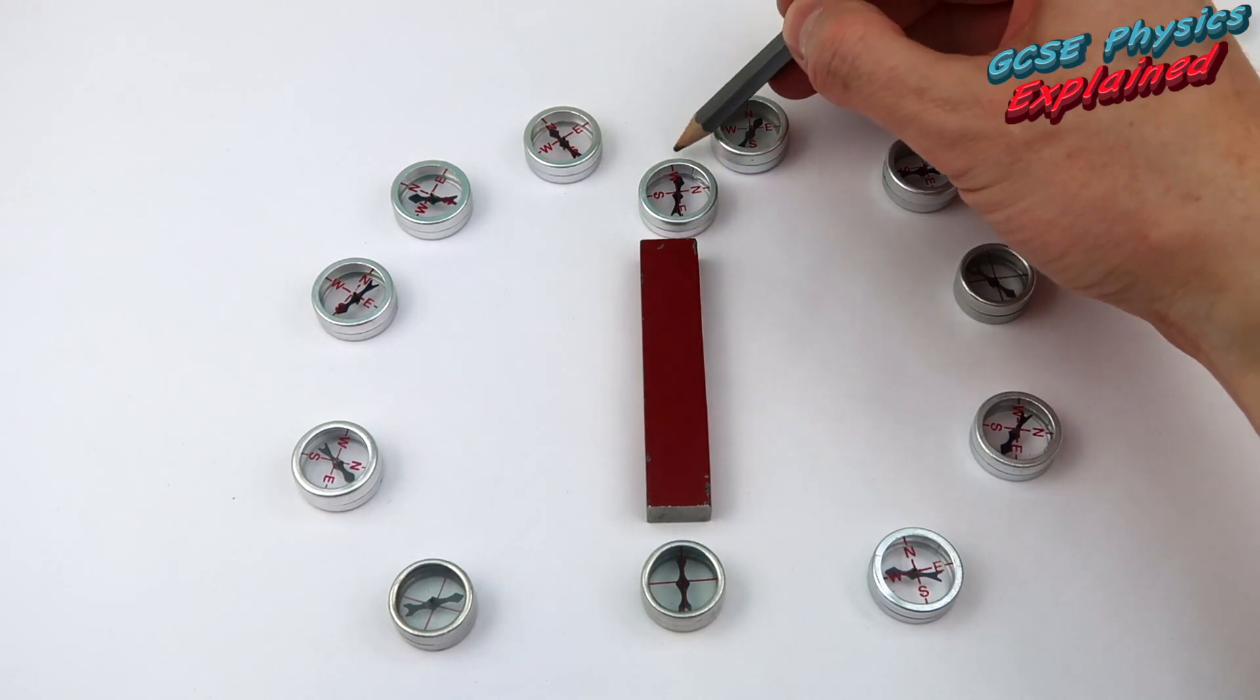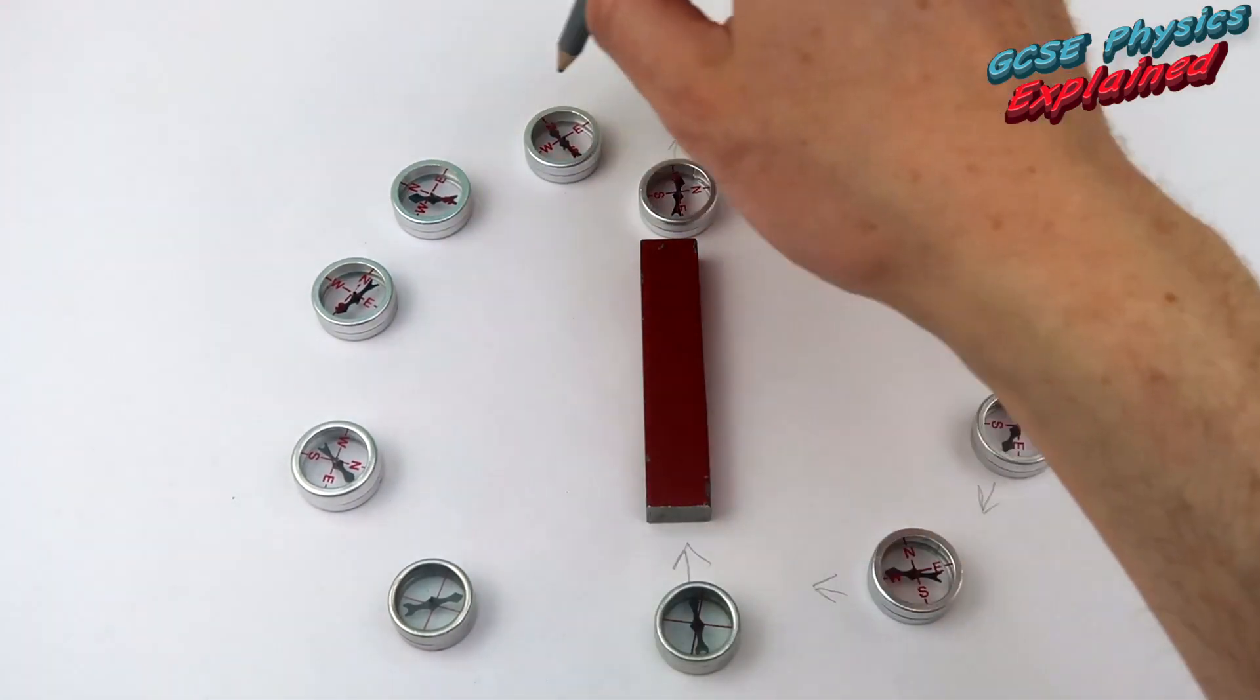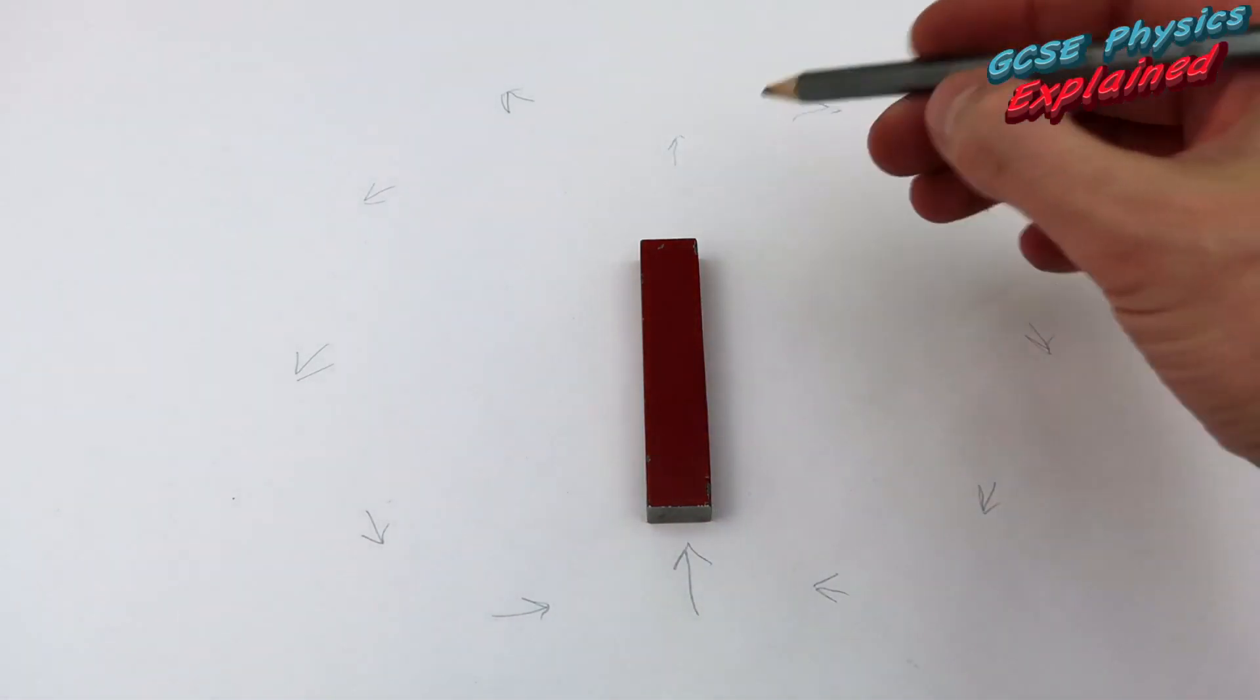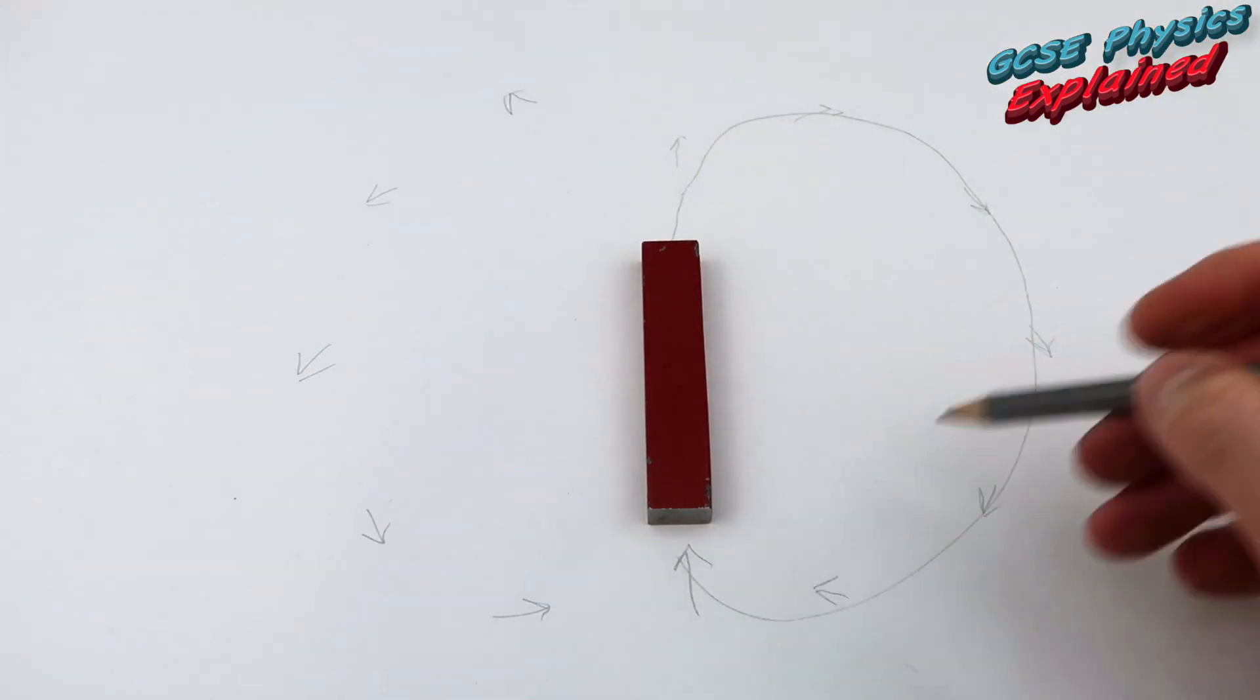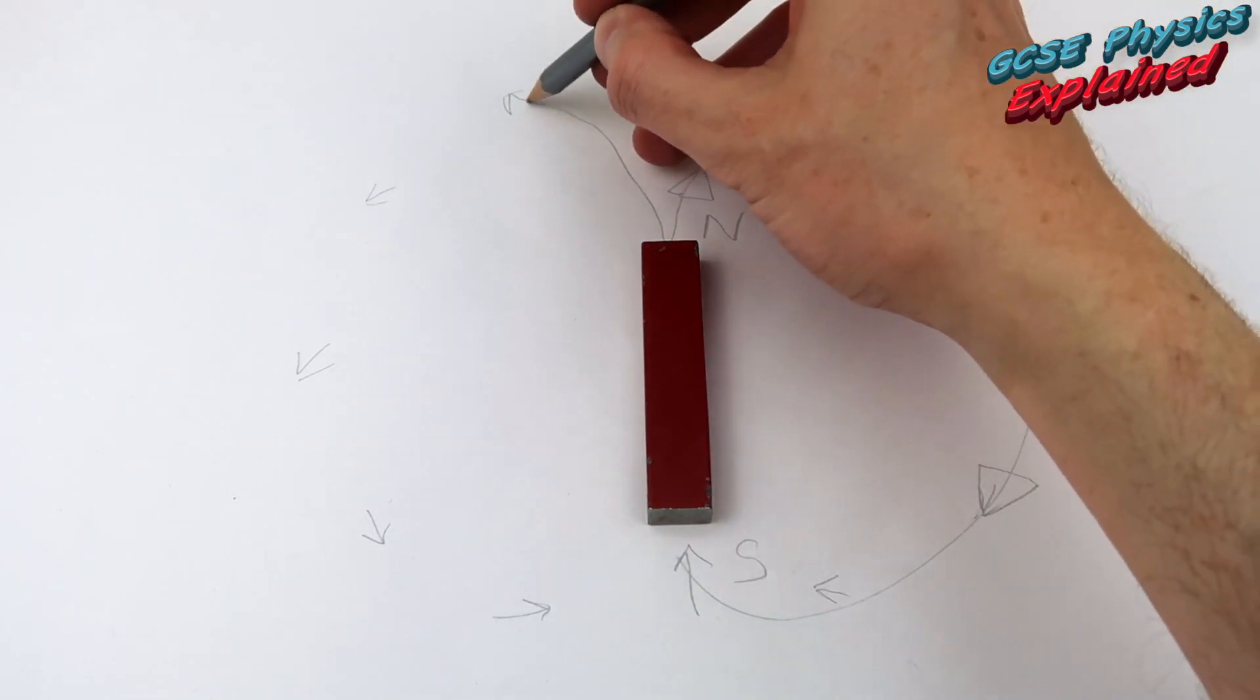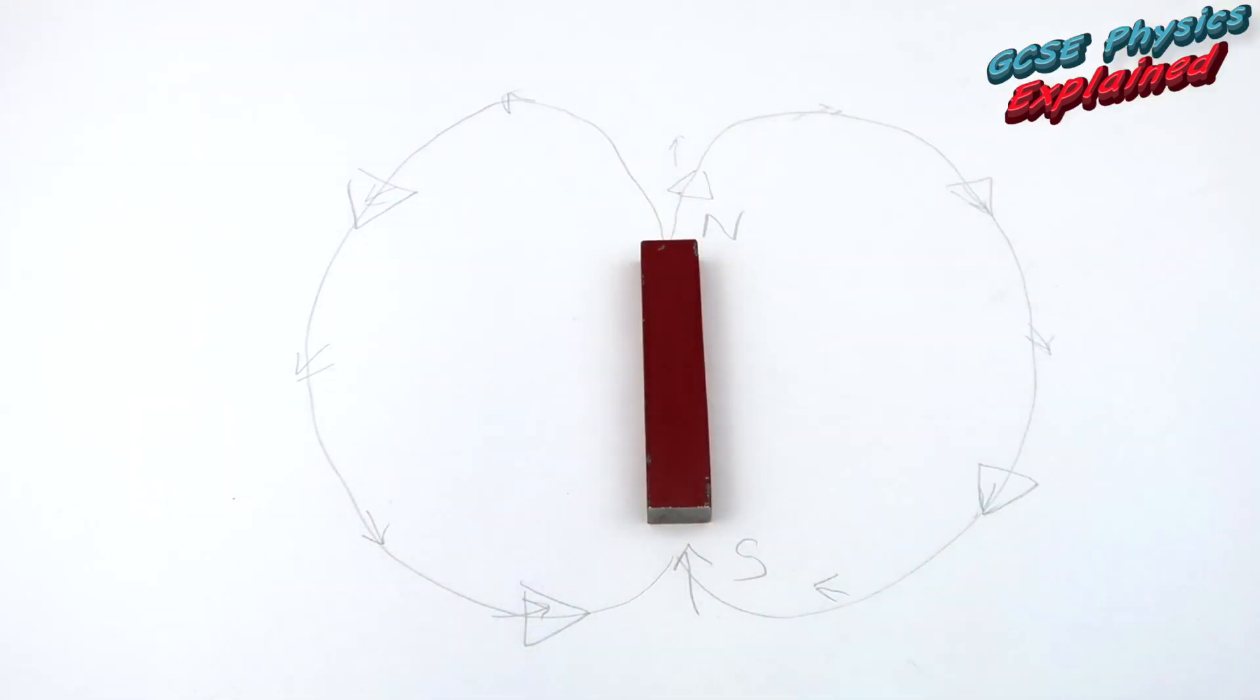So if I just drew where those arrows are pointing. And if you just move them out of the way, you can see that the field lines come round like that. Coming out of the North, going into the South. That's on both sides.